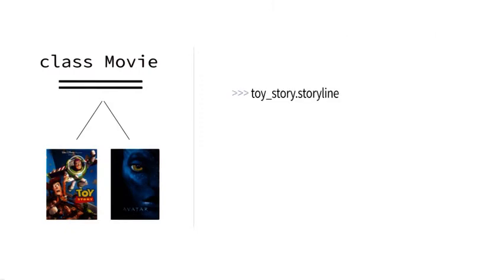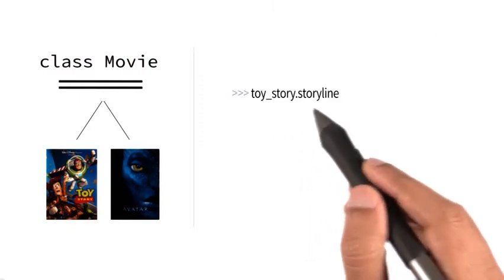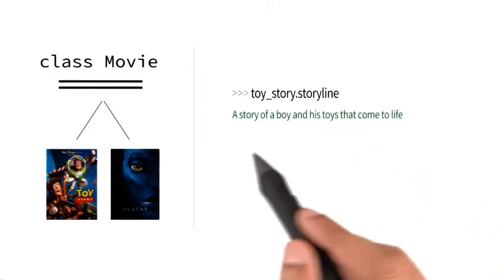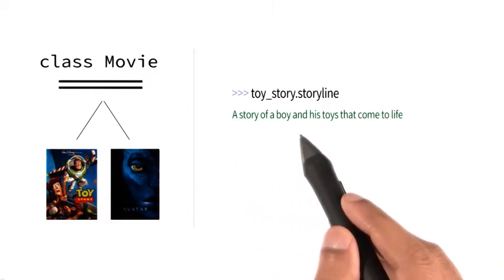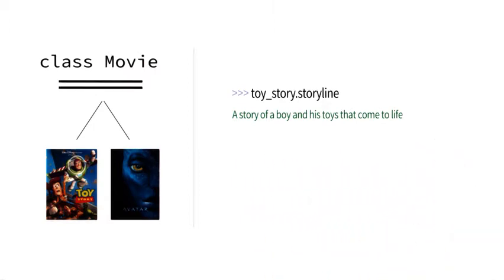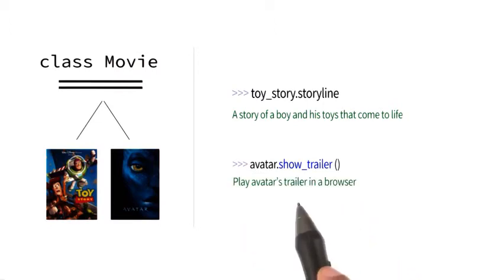Now that decision will mean that if I set something like toystory.storyline, the program will print this: a story of a boy and his toys that come to life. And if I said avatar.showTrailer, the program would play Avatar's YouTube trailer.